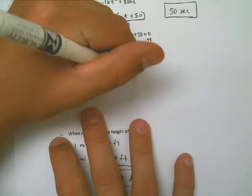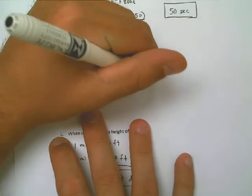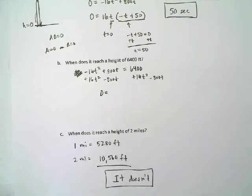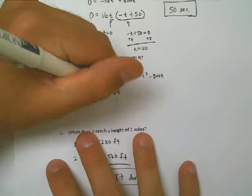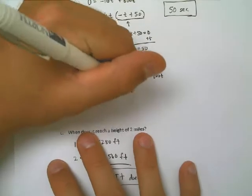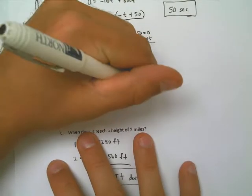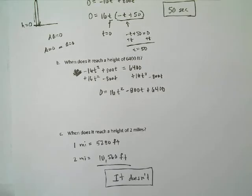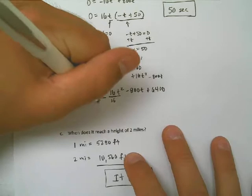I wonder if those are all divisible by 16. 800 divided by 16, we already determined is 50. 6,400 divided by 16 is 400. That's pretty nice. I'm going to divide every single thing, including the zero on the left, by 16. Zero divided by 16 is zero. That ends up being t squared. 800 over 16 is 50. And 6,400 over 16 is plus 400.